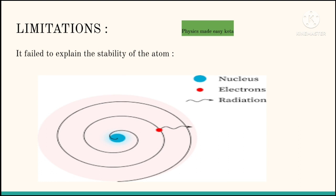Rutherford gave his best to explain the structure of atom, but here are some limitations. It failed to explain the stability of the atom. According to him, electrons revolve around the nucleus in a circular path. Anything which moves in a circular path is accelerated towards the center of the circular path and has centripetal acceleration.